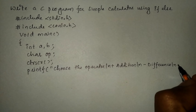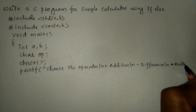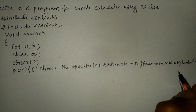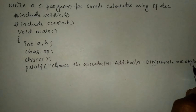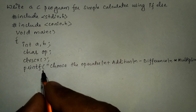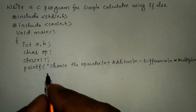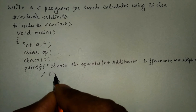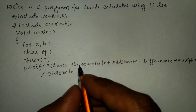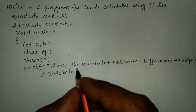Next is the asterisk symbol, which is used for multiplication, followed by backslash n. After that we write the forward slash, which is used for division, followed by backslash n. After all four arithmetic operators we need to ask the user to enter the operator.